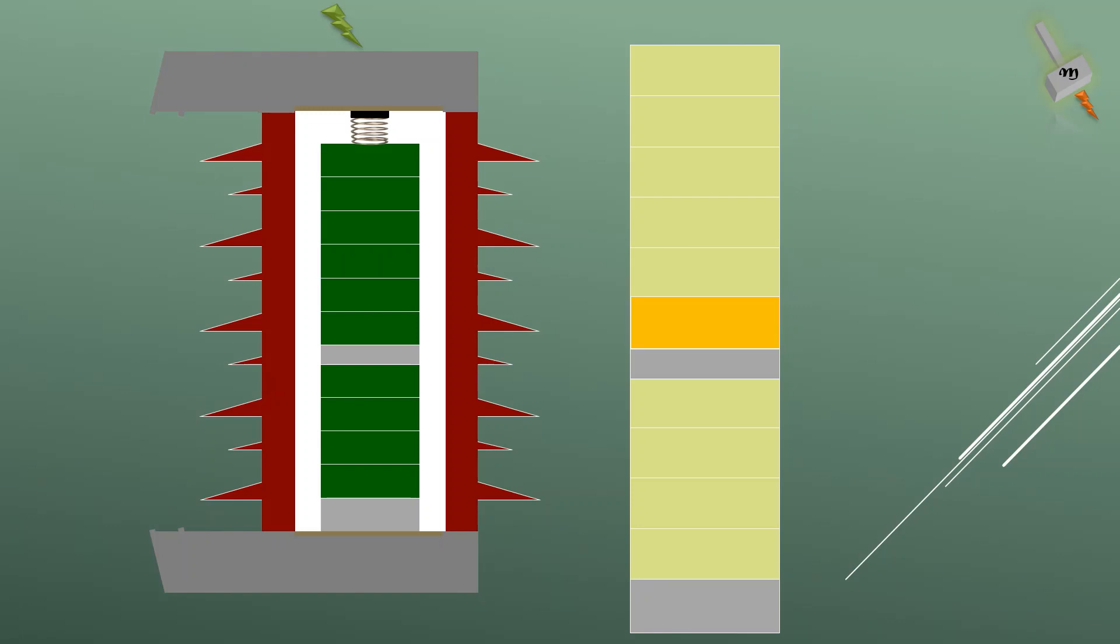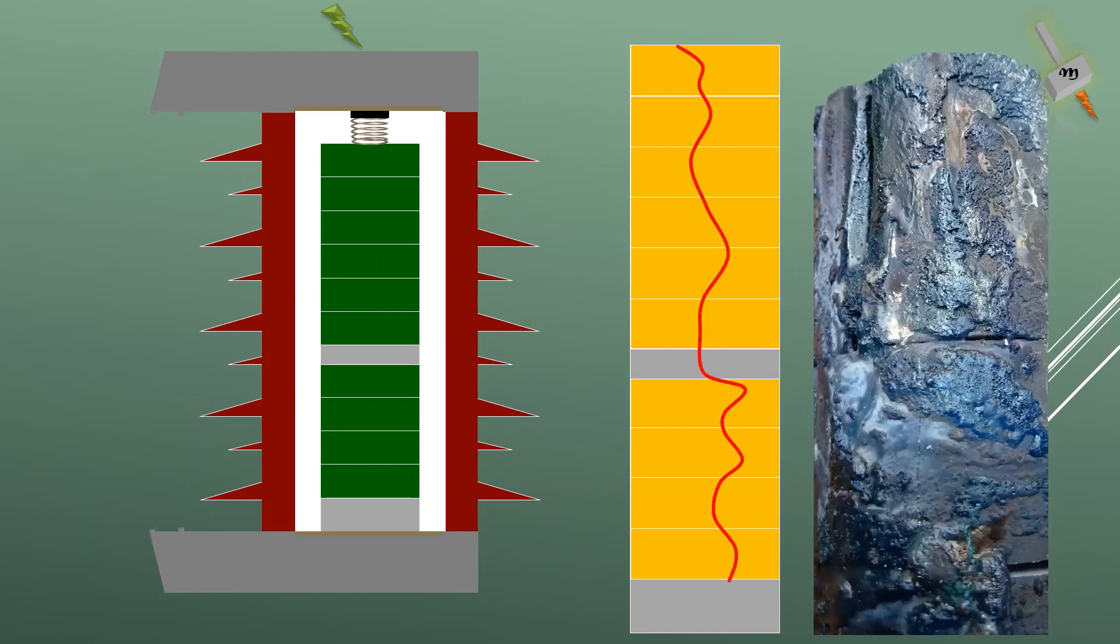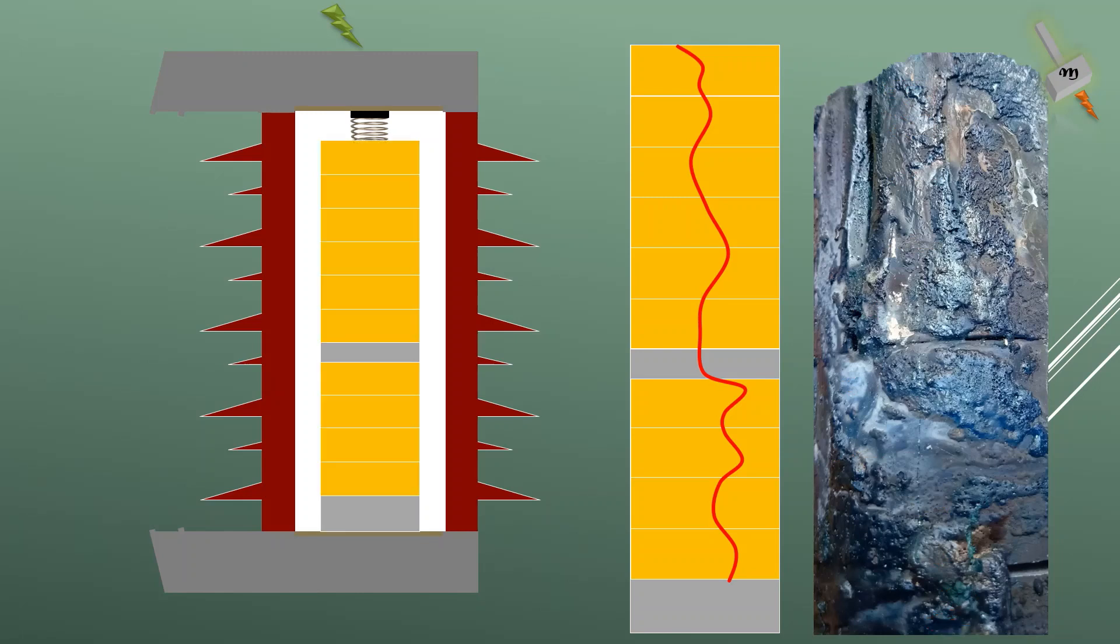the weakest metal oxide varistor fails first, creating an additional stress on the rest of the MOV, which fails as a domino effect. During this process, an arc initiated in one of the MOV develops into an arc all along the MOV stack length, generating a pressure.